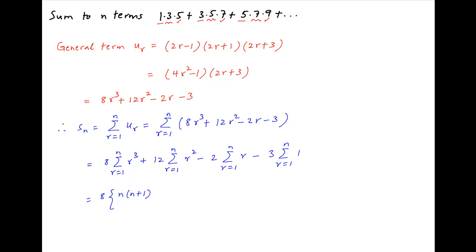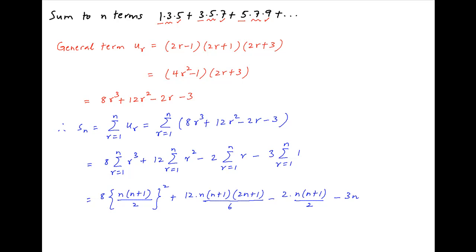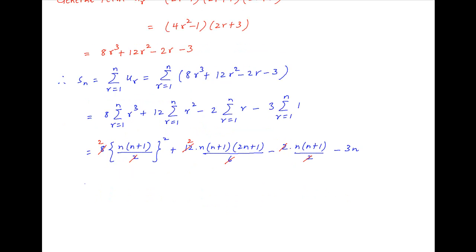The summation of R³ is equal to [N(N + 1)/2]². The summation of R² is N(N + 1)(2N + 1)/6. The summation of R is N(N + 1)/2, and finally the summation of 1 where R ranges from 1 to N is simply N. Plugging in all of these values and simplifying, then taking N as a common factor across the board, we get N times the expression in brackets.